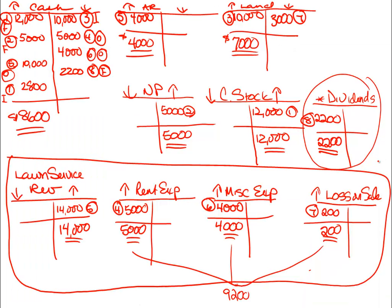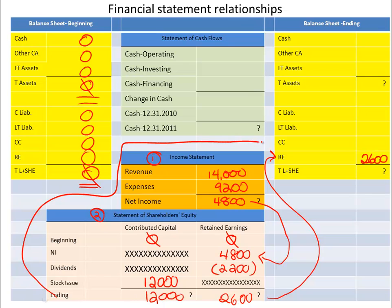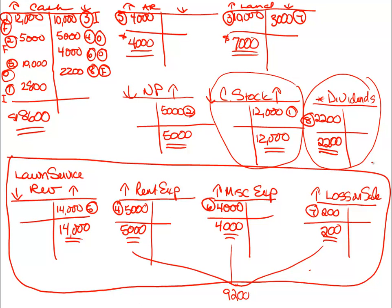Looking at contributed capital or the capital stock account, during the year we issued $12,000 of stock. So we have an ending balance of contributed capital or common stock of $1,200.